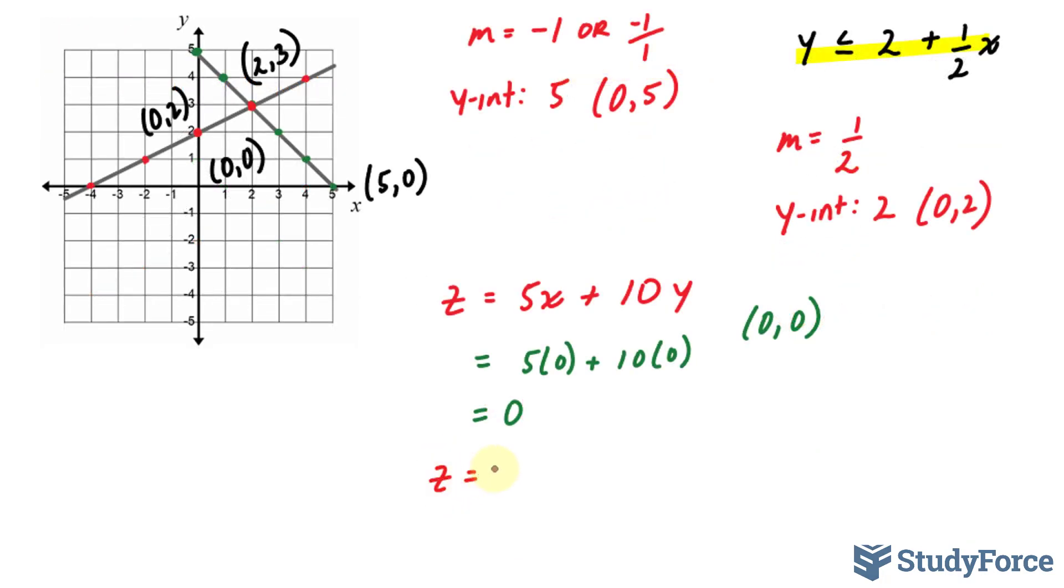Next, we'll try 5 times 5, this point, plus 10 times 0. We end up with 25. And for clarity's sake, I'll just highlight the region that is permissible.